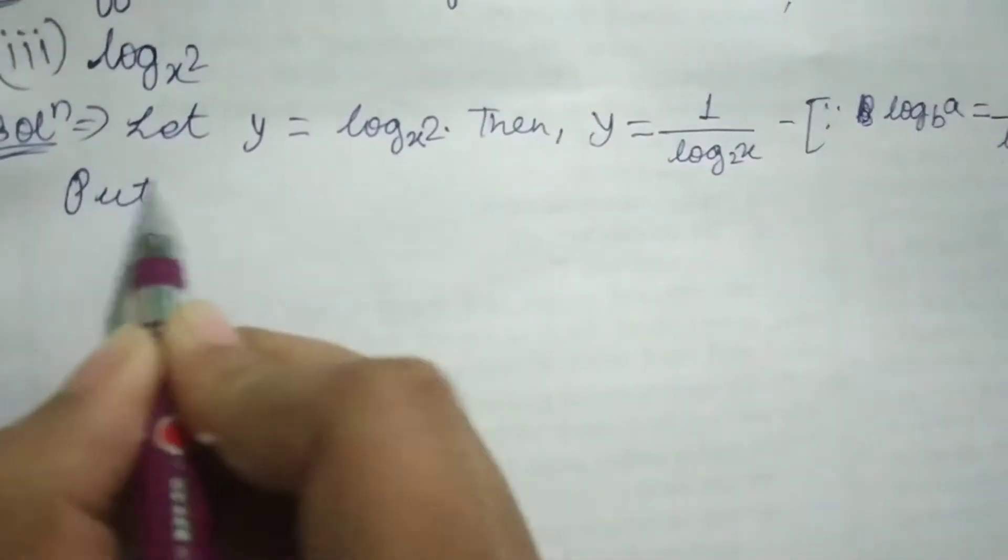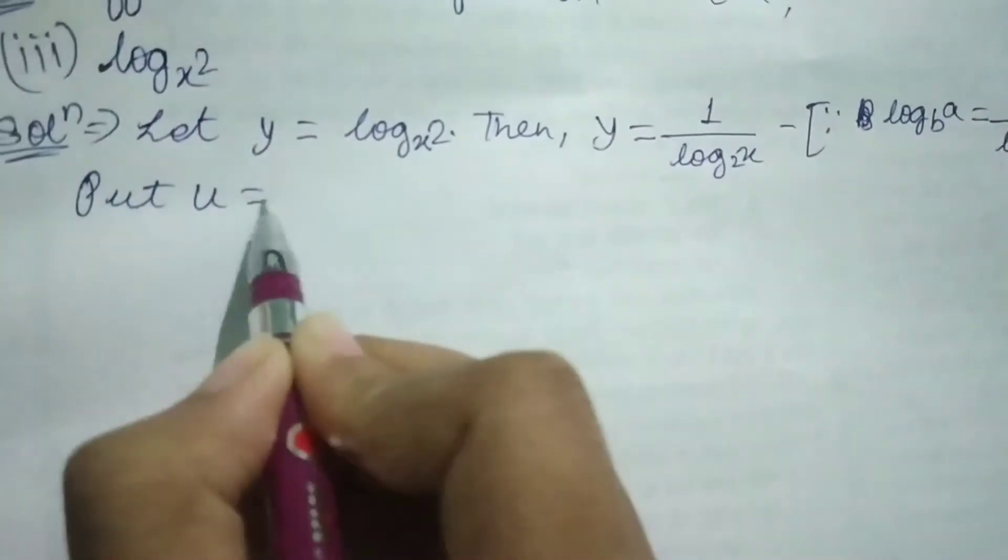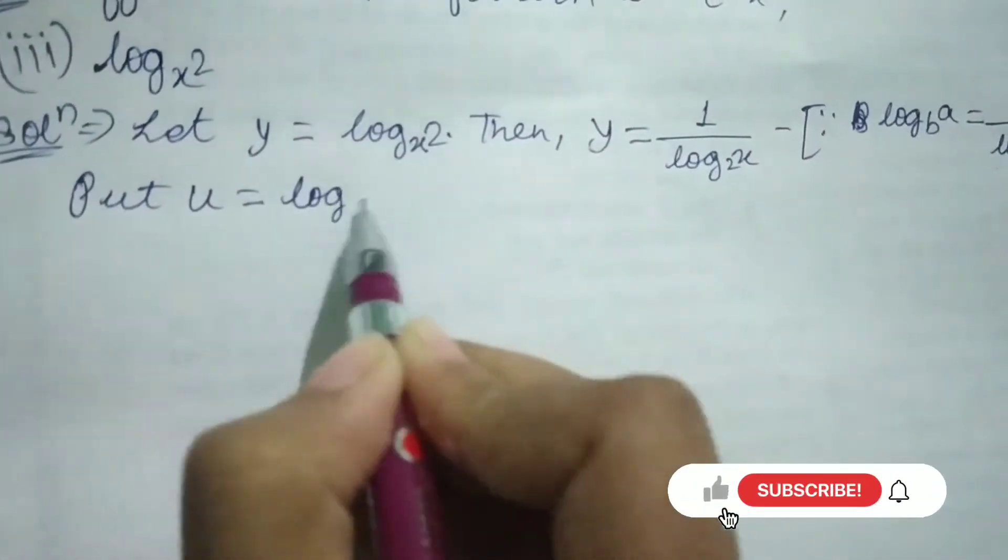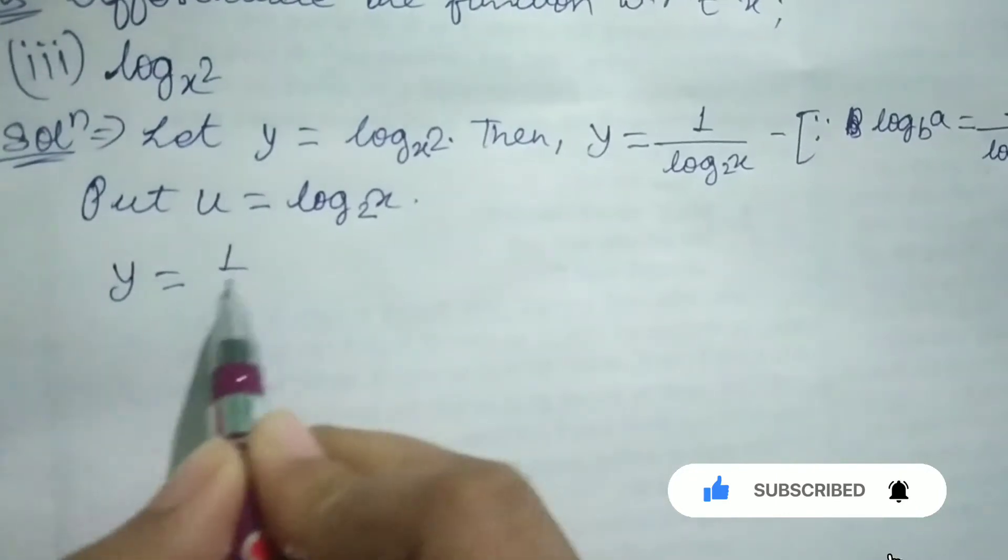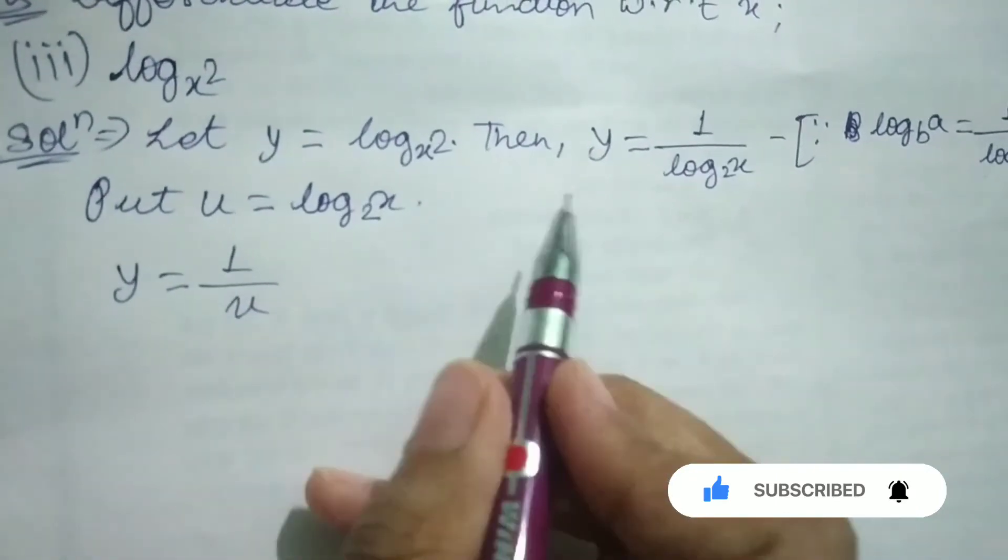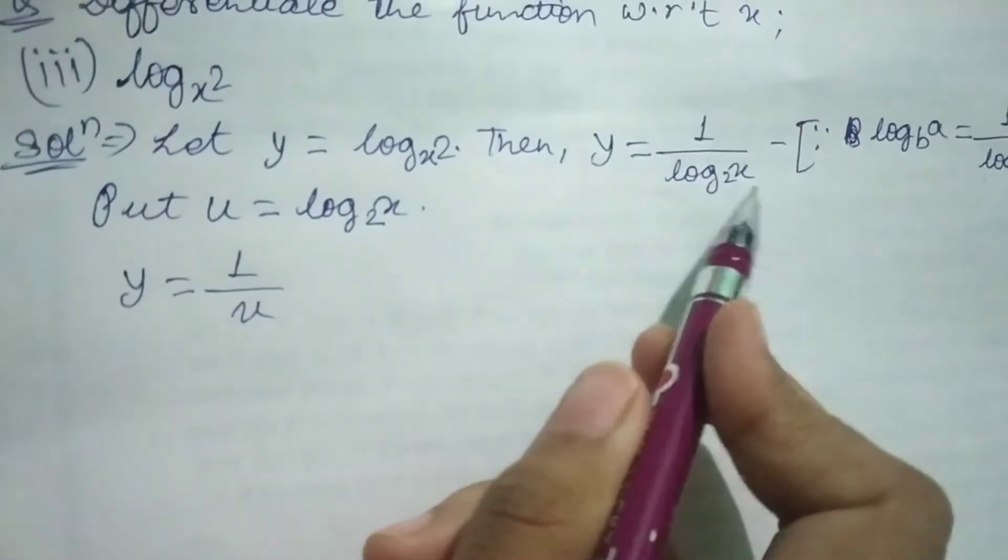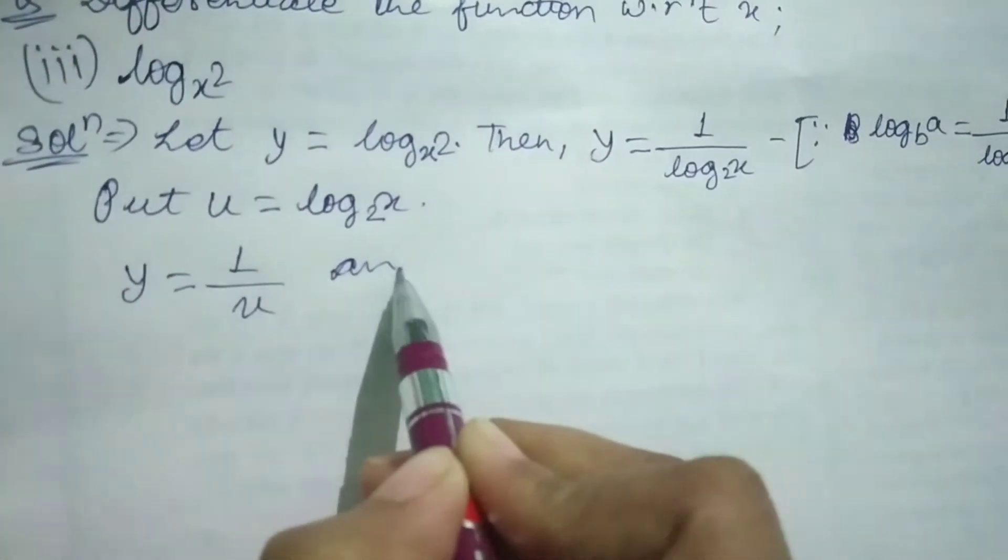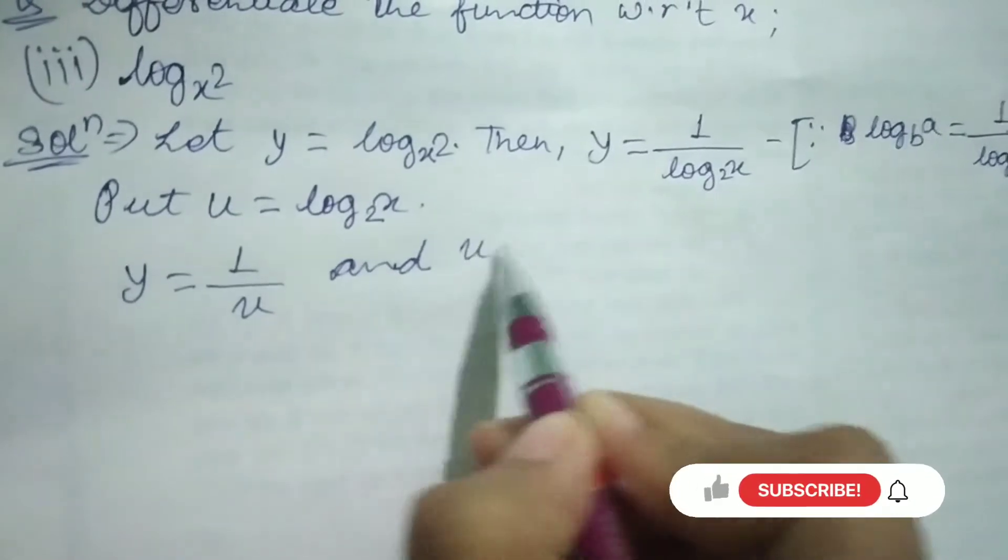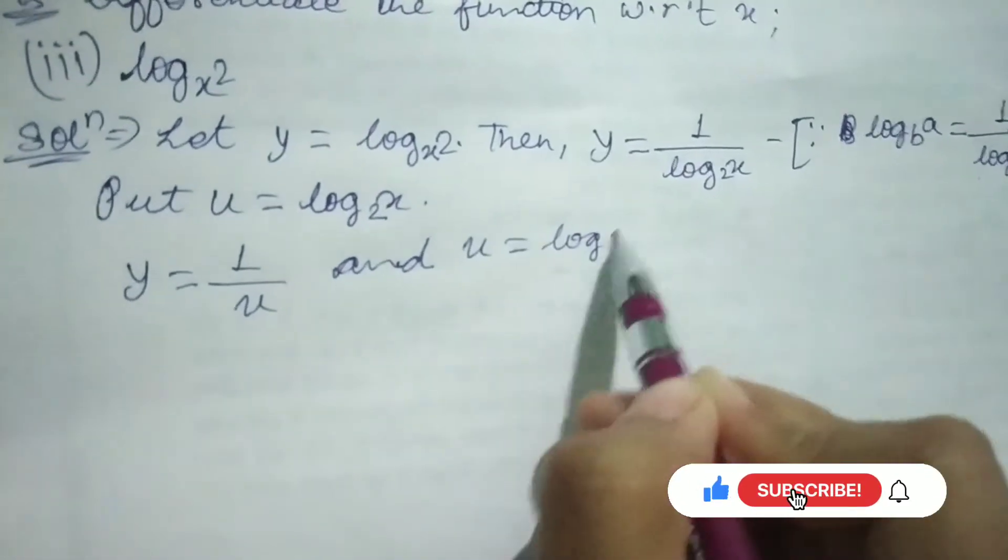Now put u equals log base 2 of x. Then y equals 1 over u, because the value of log base 2 of x is u.